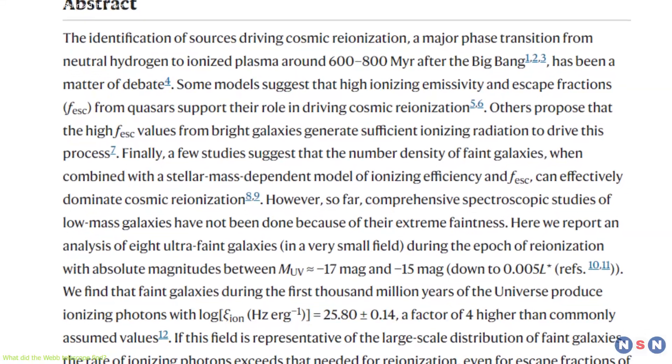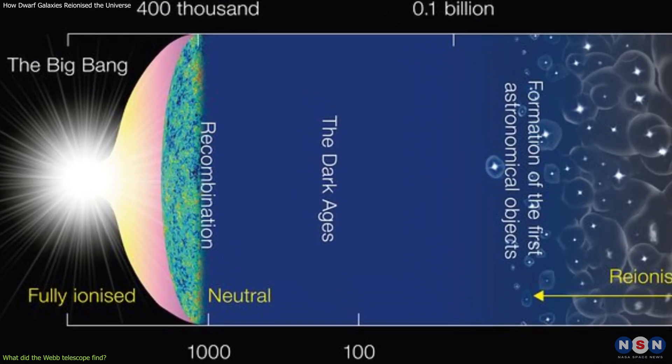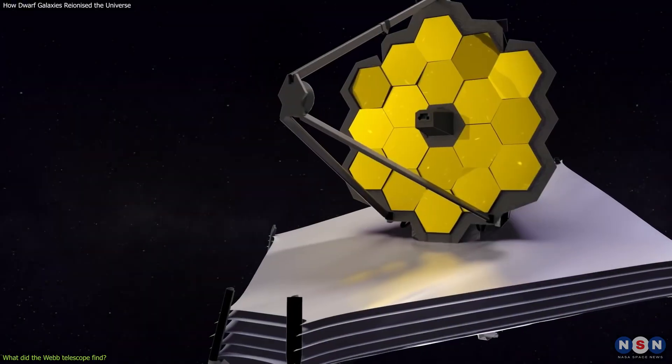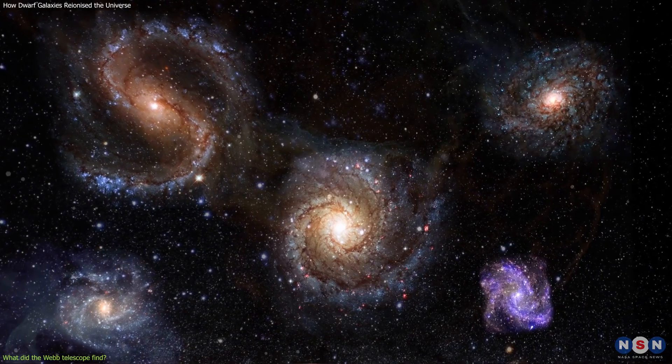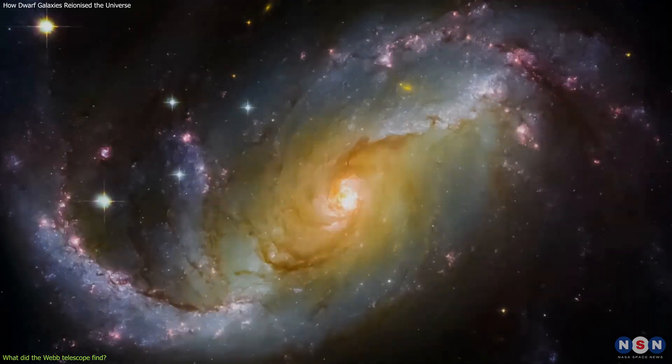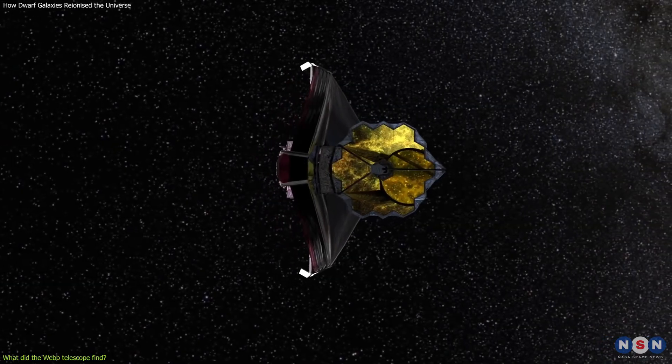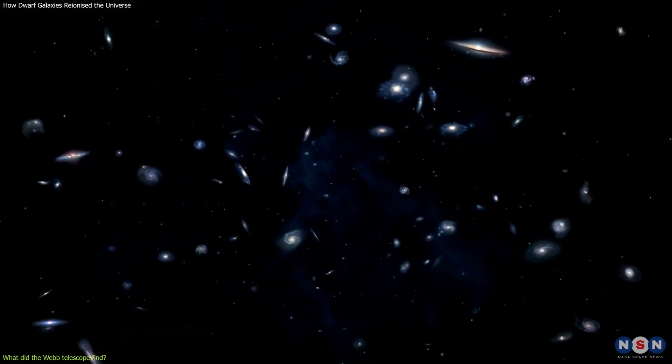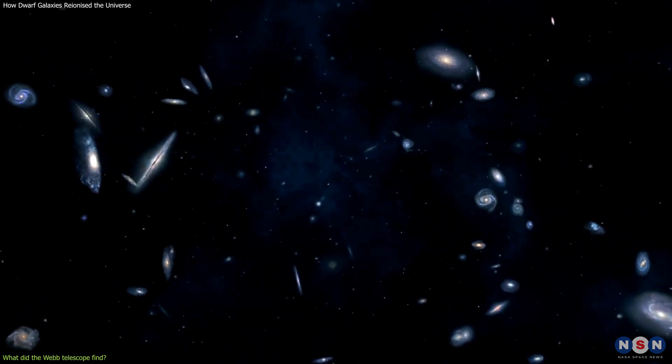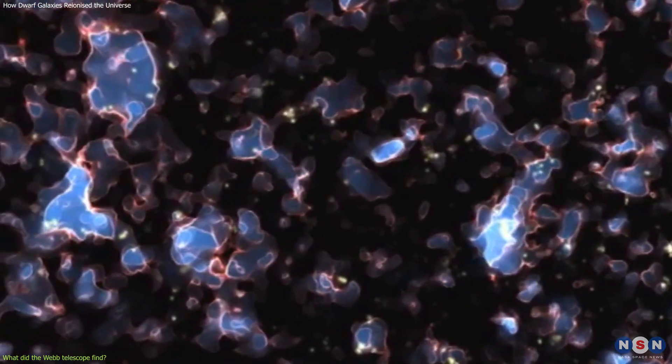These results are surprising and exciting, as they challenged the previous models and assumptions about the reionization process and the sources of the ionizing radiation. Before Webb, most of the studies focused on the brighter and more massive galaxies, which are easier to observe, but also less numerous and less efficient at ionizing the universe. However, Webb Telescope has shown that the fainter and less massive galaxies, which are harder to observe, but also more numerous and more efficient at ionizing the universe are the dominant contributors to the reionization process.